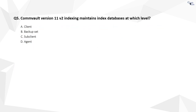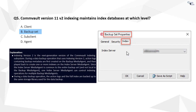Question 5. The correct answer is B. V2 indexing maintains an index database at the backup set level. V1 indexing maintains indexes at the sub-client level.